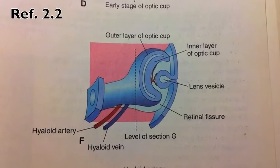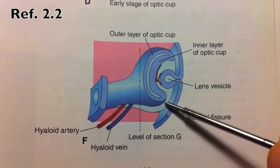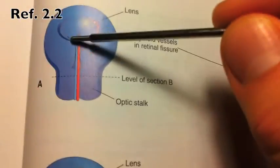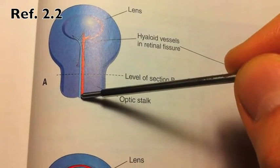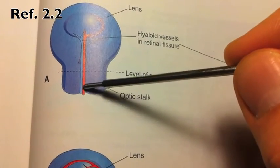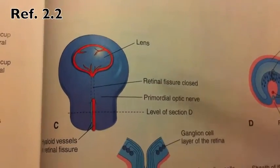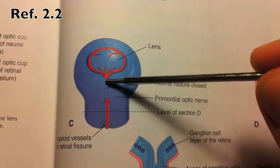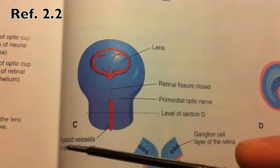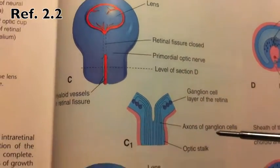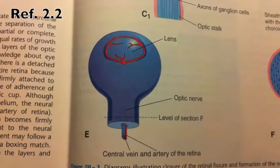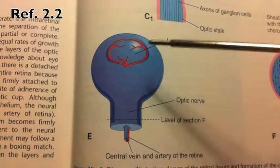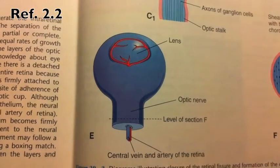Let's look at the normal closure of the retinal fissure and the transition from hyaloid to central vessels. We can see the developing lens and the retinal fissure, with hyaloid vessels running down the midline. The retinal fissure then closes in the middle, extending anteriorly toward the lens and posteriorly. Finally, the retinal fissure is fully closed as it should be in normal development, and the hyaloid vessels are now renamed the central vein and artery of the retina.